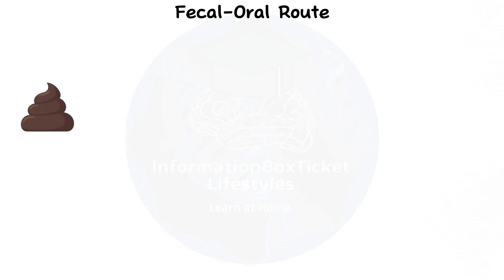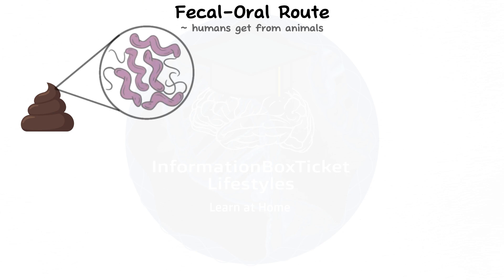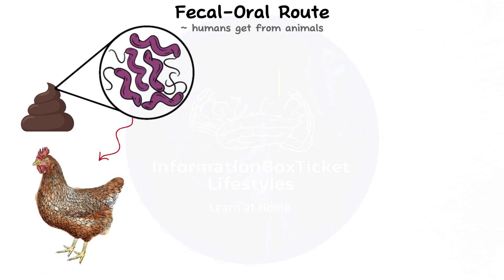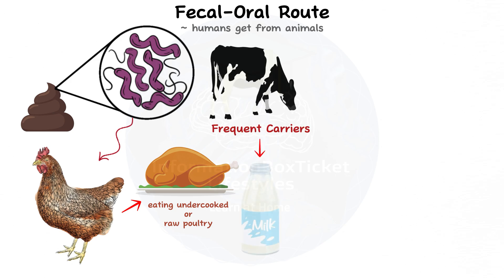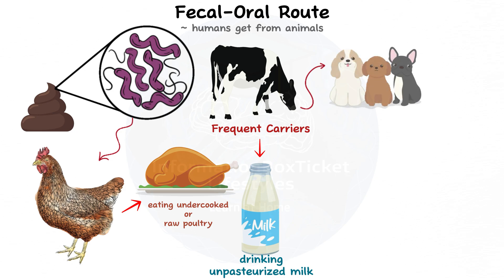The fecal-oral route is the typical means by which humans get Campylobacter jejuni from animals — that is, the bacterium is ingested via fecal particles. In birds, Campylobacter jejuni is often found in the gastrointestinal system, so eating undercooked or raw poultry increases the risk of illness. In the same way, cows are frequent carriers, and drinking unpasteurized milk puts humans at risk. There is also direct contact with infected pets, notably puppies, which excrete the bacteria in their stool.